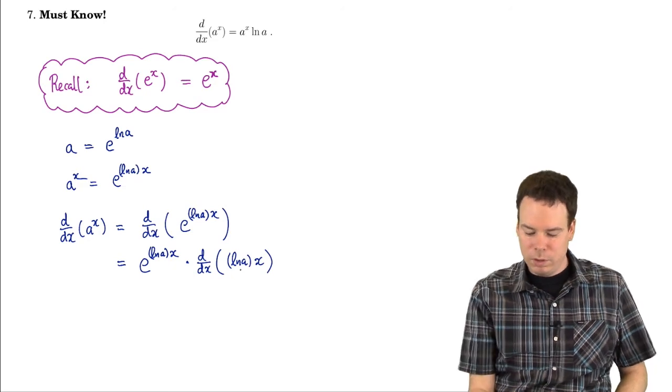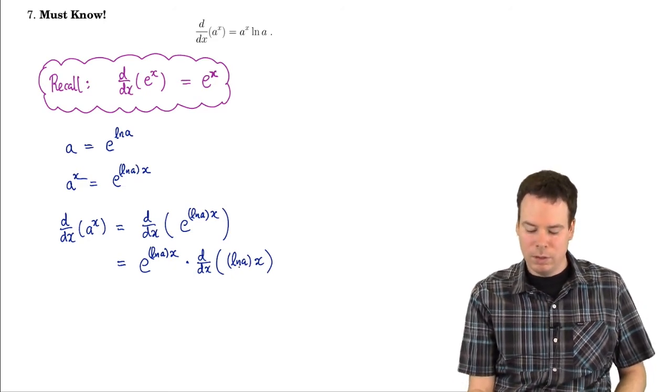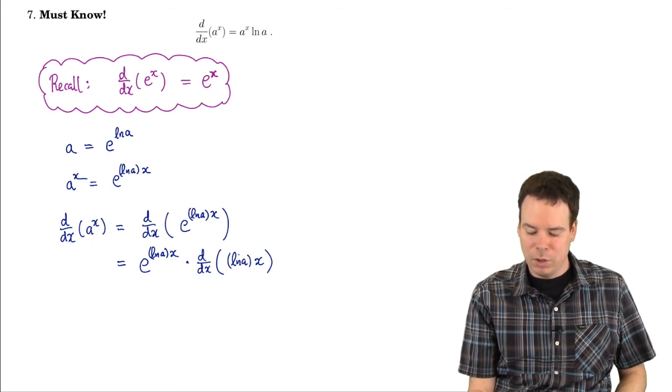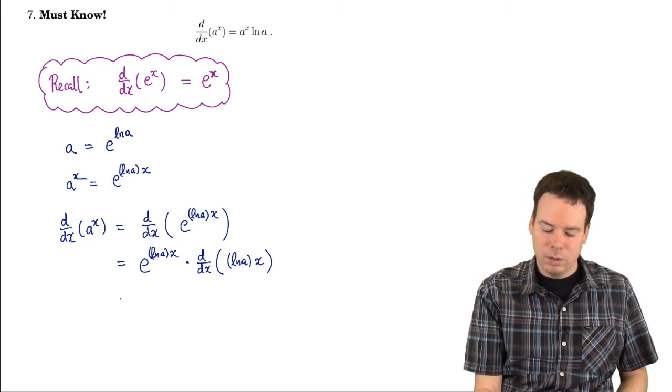Now it's important to observe here that ln of a is just a number. a was a number, ln of a, that's just a number. So this is some constant times x. So what's the derivative?